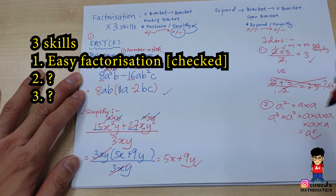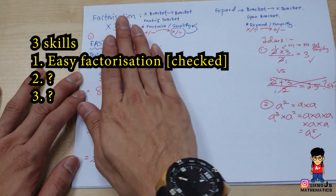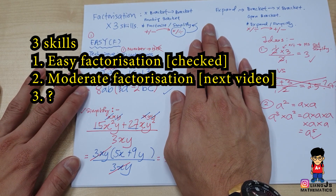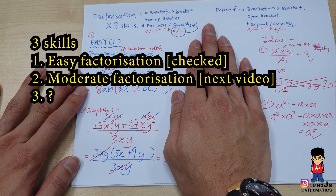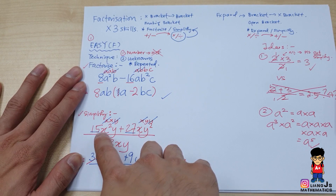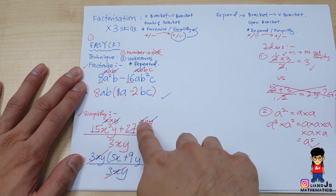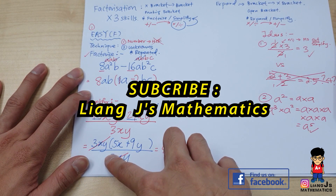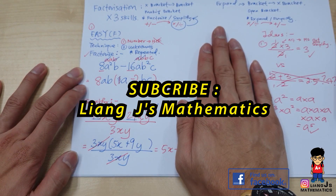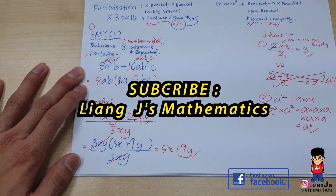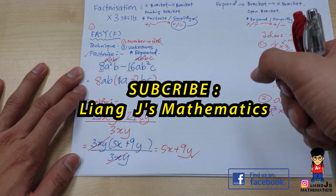So that's how we do the first version of factorization — the easy way. We have a total of 3 skills; this is only Skill 1. Stay tuned for the next video covering the next level — moderate factorization. If you like this video, share it, tag your friends, and subscribe for the next interesting video. Bye!